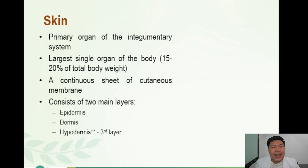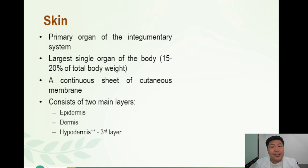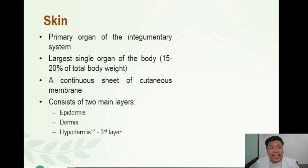The main player of the integumentary system is the skin. It is the primary organ of the integumentary system and the largest single organ of the body, composing around 15 to 20 percent of your total body weight — imagine that one-fifth of your weight is due to your skin. It is a continuous sheet of cutaneous membrane with no breaks, from the top of your head down to the soles of your feet. There are two main layers: the epidermis and the dermis, with most recent books adding a third layer, the hypodermis.